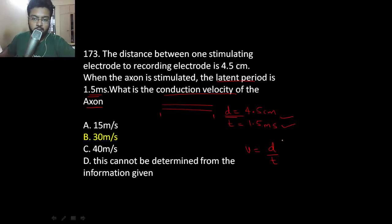See, velocity is distance by time. So you put in the values: 4.5, you have to convert this into meters, and 1.5 milliseconds into seconds. So the answer turns out to be 30 meters per second.